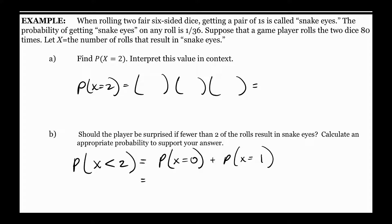Suppose a game player rolls the dice 80 times. X is the number of rolls that result in snake eyes. Find P(X=2) — that means find the probability that out of 80 rolls, exactly two are snake eyes. For equals, we go 80 choose 2. The probability of success is 1/36, which is 0.028. The power that goes with success is 2, because there are only two successes.